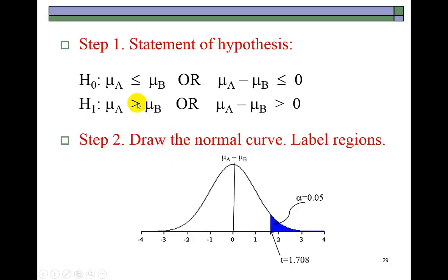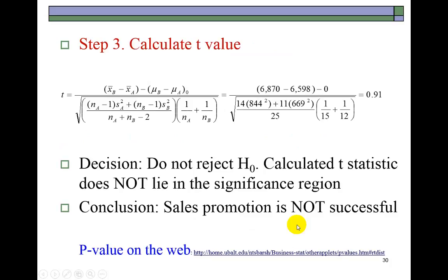Proceeding with this study, the alternative is that the average revenue after the promotion is greater than what it was prior to the promotion. Since this inequality is pointing to the right, this is going to be a right-tail test. Once you catch the logic in determining the side where the tail belongs, you will no longer need to know which side the inequality in the alternative hypothesis faces. This is the T statistic, and we plug and play, and we find the results to be 0.91.